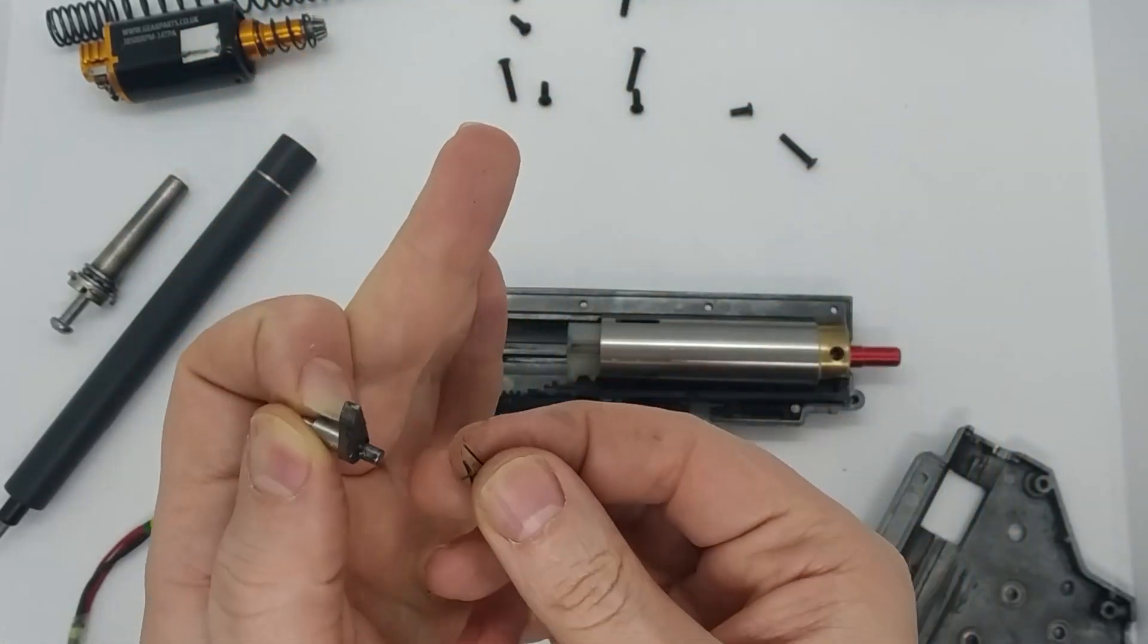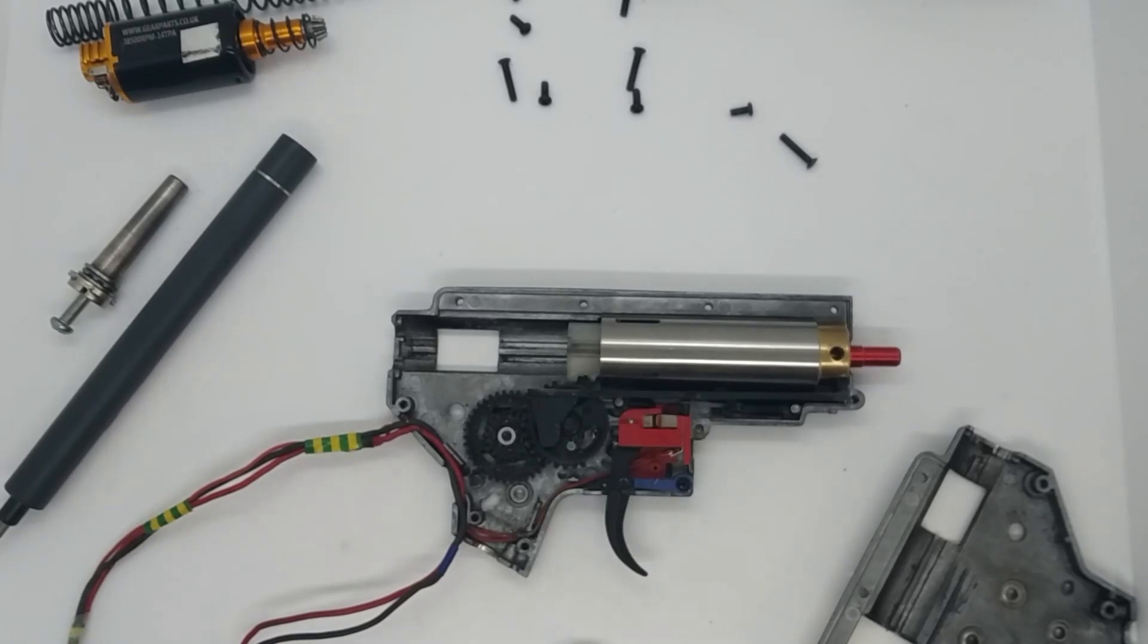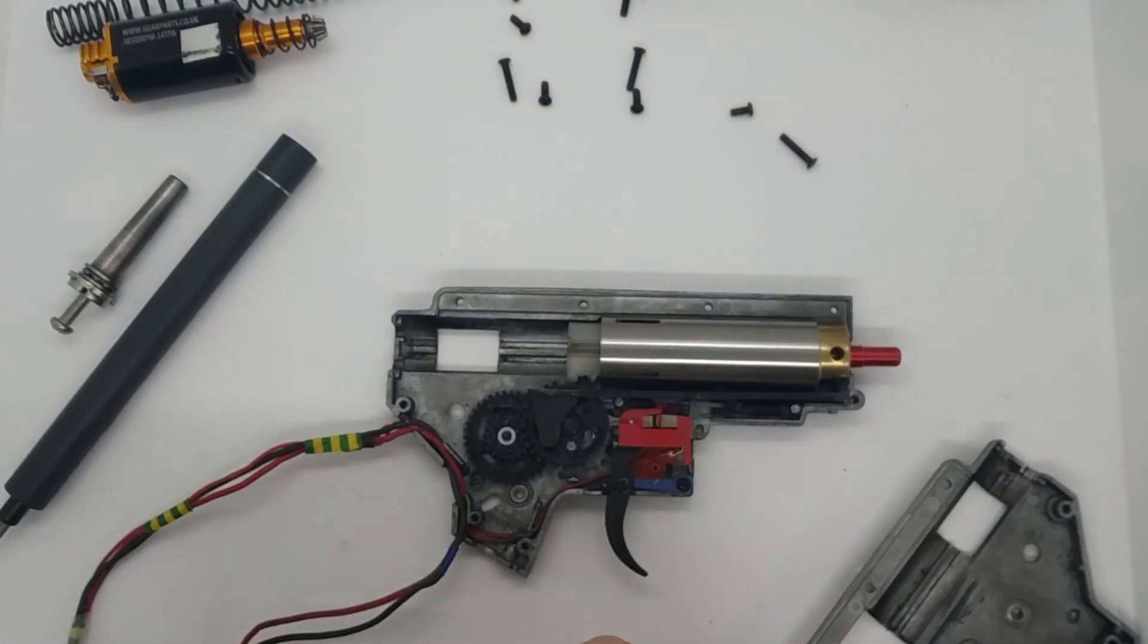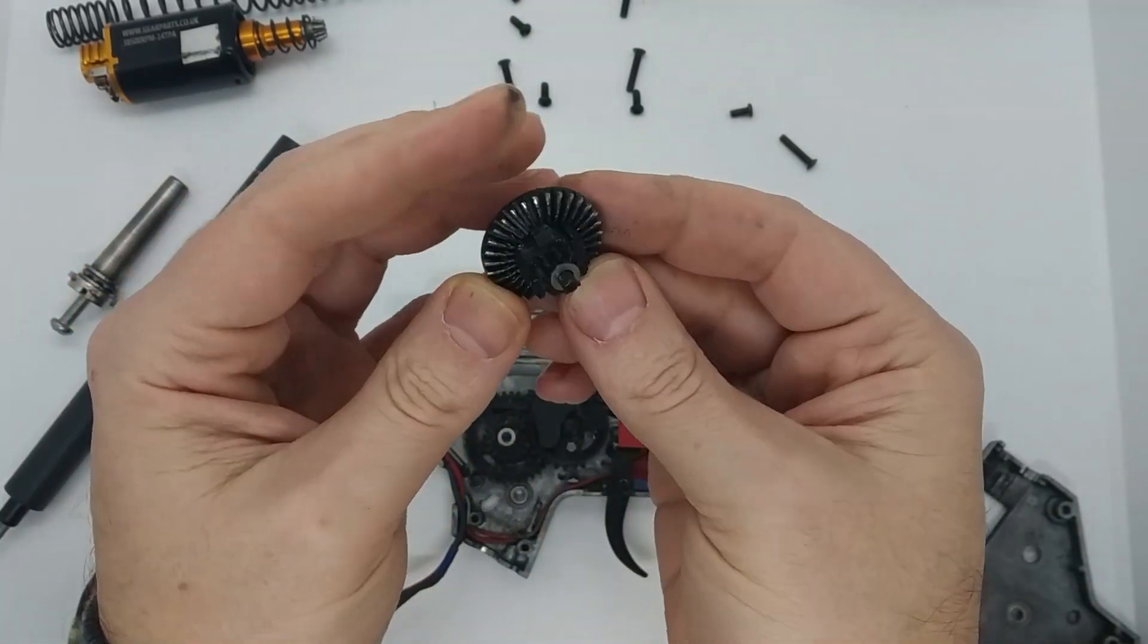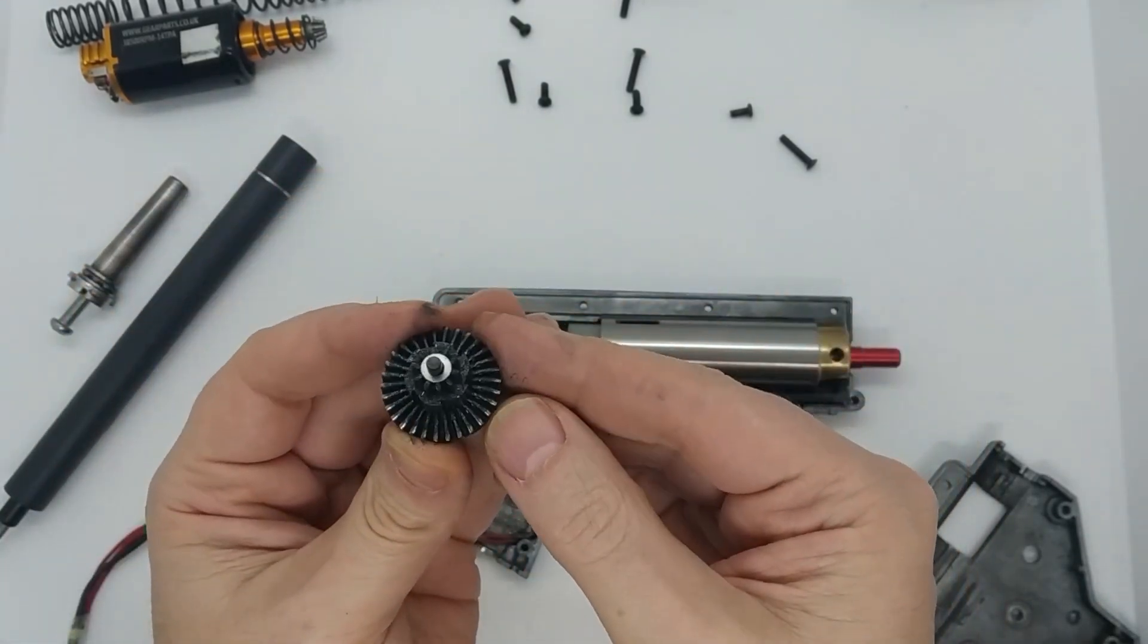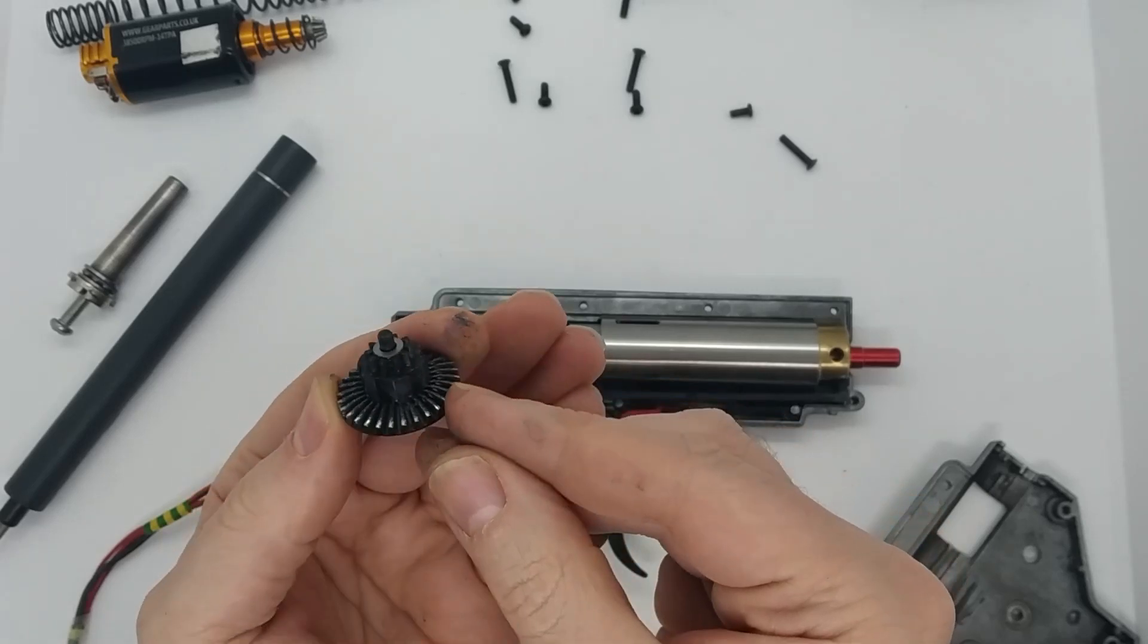Okay, bevel gear, a little bit of wear on it. A bit of black paint coming off, a little tiny bit of wear on that.